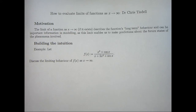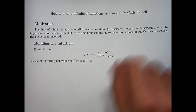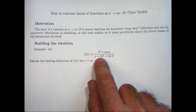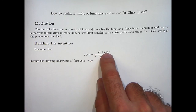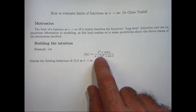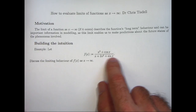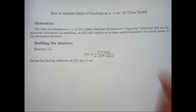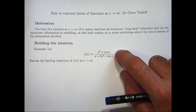Let's build our intuition and talk about a specific example. We've got a function and we're asked to discuss the limiting behaviour as x approaches infinity. If I naively look at each of the limits of the individual terms: the limit of x squared as x approaches infinity tends to infinity; the limit of cos(x) doesn't exist because cos(x) just oscillates between minus 1 and 1; the limit of x is positive infinity; the limit of 2x squared is similarly positive infinity; and the limit of sin(x) as x goes to infinity also doesn't exist — it oscillates similar to cos(x). So in its current form, this is not in a good form for taking the limit.